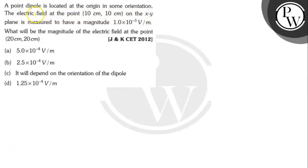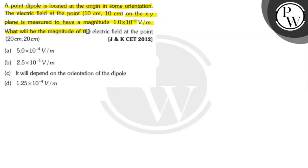Hello. Let's read the question. The question says here: a point dipole is located at the origin in some orientation. The electric field at the point (10, 10) cm on the xy plane is measured to have a magnitude of 1.0×10⁻³ V/m. What will be the magnitude of the electric field at the point (20, 20) cm?